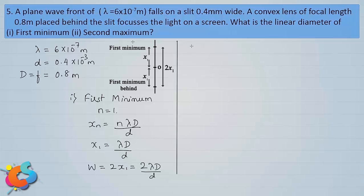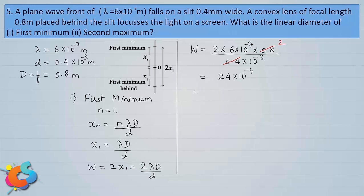Now let us substitute the respective values. The width of the central maximum is 2 × 6×10⁻⁷ × 0.8 divided by 0.4×10⁻³. Cancelling 0.4 with 0.8 gives 2 in the numerator, leaving 24×10⁻⁴, which equals 2.4 millimeter. So 2.4 millimeter is the linear width of the central maximum, or the linear diameter of the first minimum.